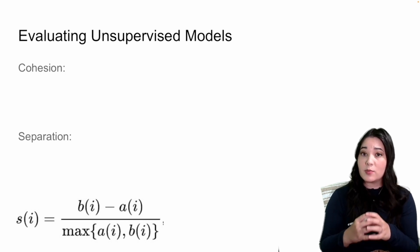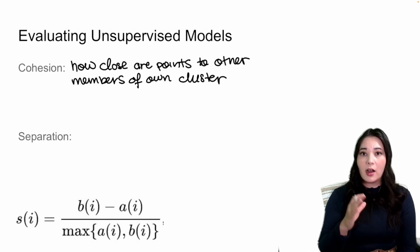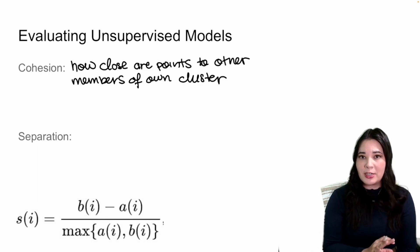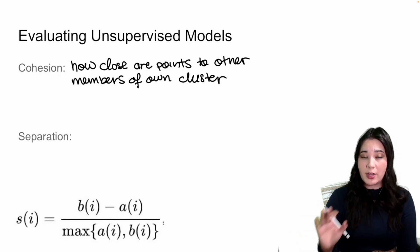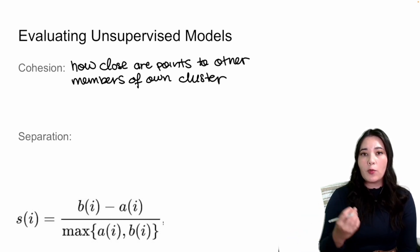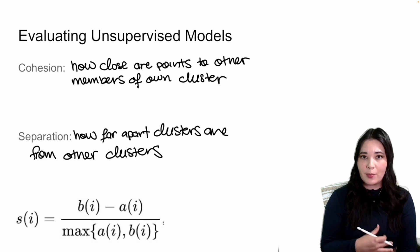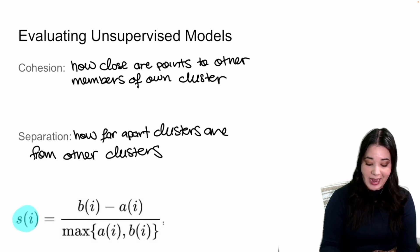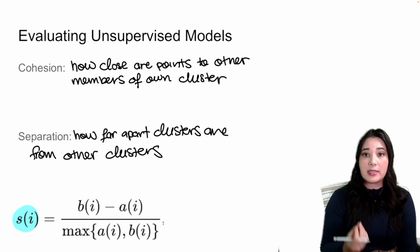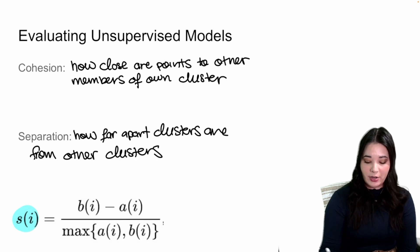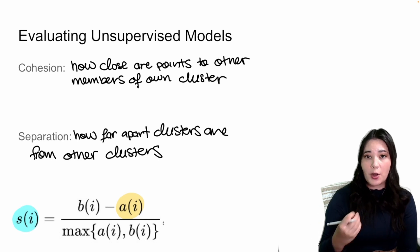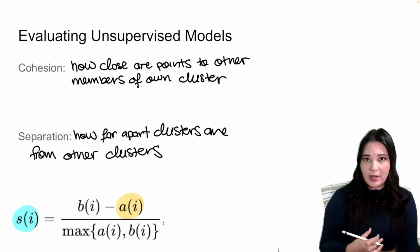Separation measures how different different clusters are from each other. If we have good, well-defined groups, then different groups are very different from each other. If we have well-defined clusters, we hope they have high cohesion and high separation. One way to measure both cohesion and separation is with something called a silhouette score. The silhouette score compares two things: the first is the 'a' term, which represents the average distance between a data point and other members of its own cluster.